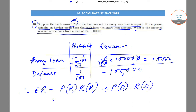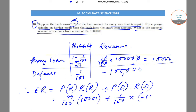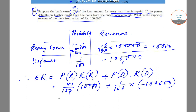Substituting the values: (99/100) × 10,000 + (1/100) × (−1,00,000). The first term gives 9,900 and the second term gives −1,000. So the expected revenue is 9,900 − 1,000 = 8,900 rupees. This is the expected revenue of the bank from a loan of one lakh rupees.